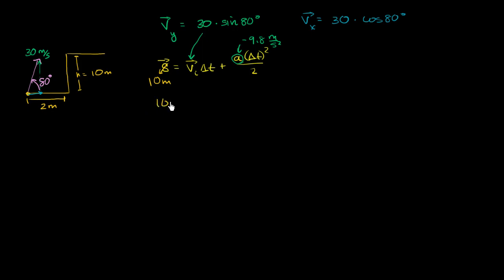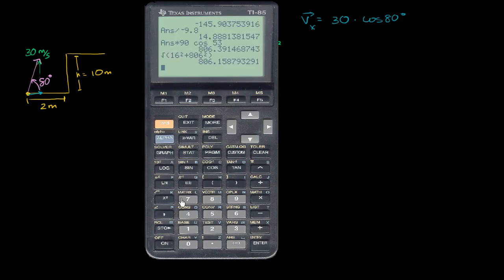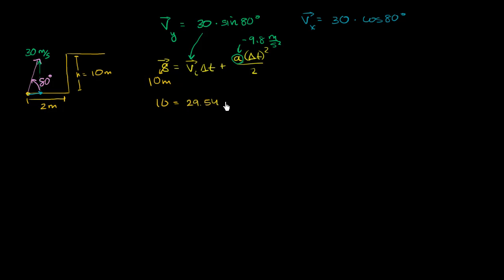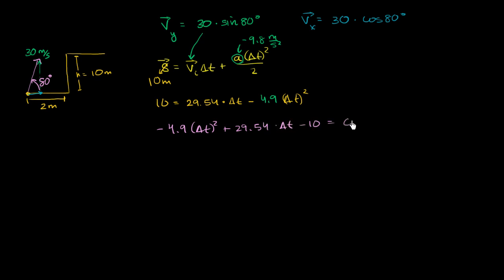Plugging in: 30 times sine of 80 degrees gives us 29.54, so the equation becomes 10 equals 29.54 times delta t minus 4.9 times delta t squared. Subtracting 10 from both sides and rearranging into standard quadratic form: negative 4.9 times delta t squared plus 29.54 times delta t minus 10 equals 0.